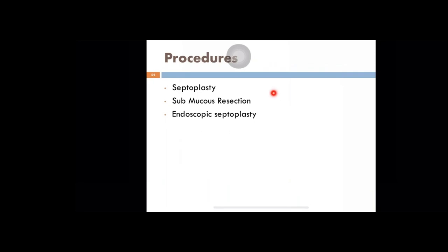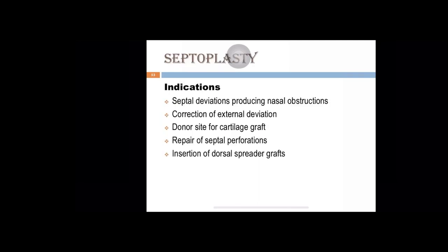The various procedures for treatment of septal deviations are septoplasty, submucous resection, and increasingly endoscopic septoplasty. Indications of septoplasty include septal deviations producing nasal obstruction, correction of external deviation, donor site for cartilage graft for various procedures including reconstruction of skull base defects to close CSF leaks, repair of septal perforations, and insertion of dorsal septal grafts to augment the dorsum of the nose in saddle nose deformities.